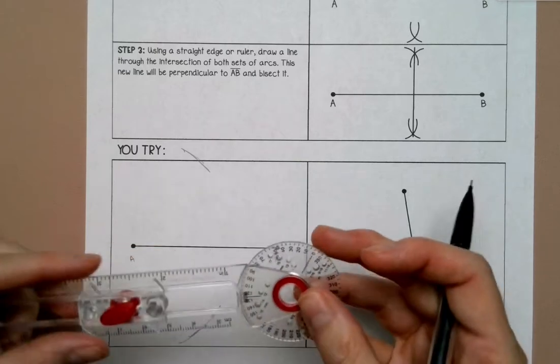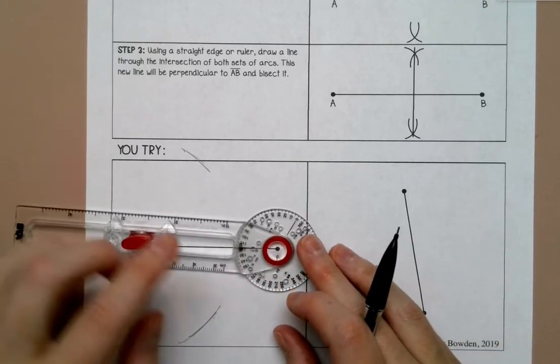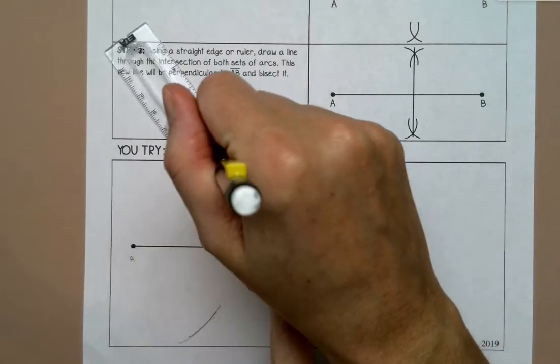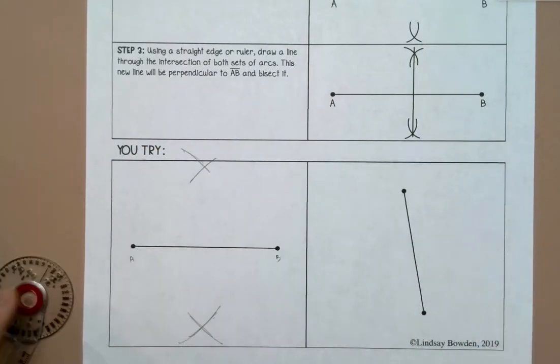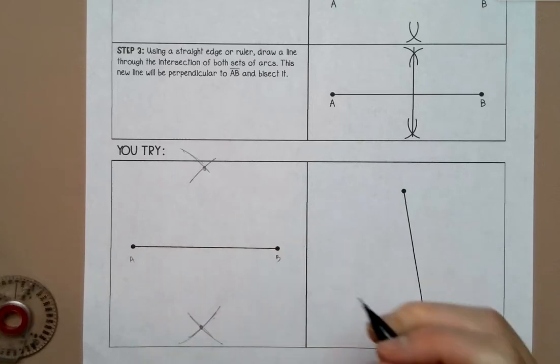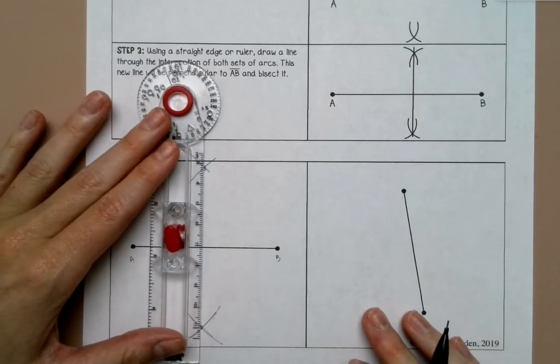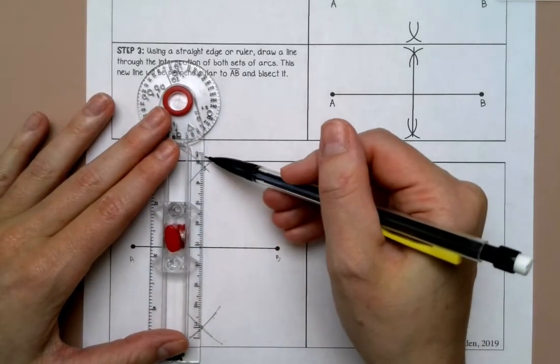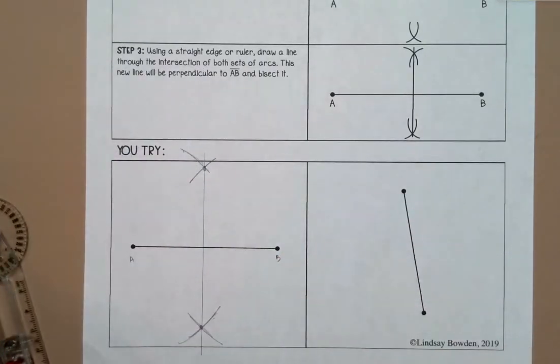Then I'm going to not change the width of my compass but move it over to B and do the same thing above and below. And then where those arcs intersect, I'm going to line up a ruler or a straight edge and draw my line.